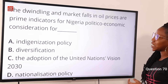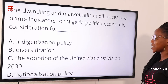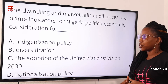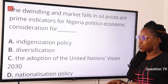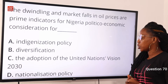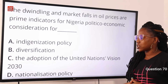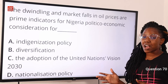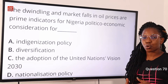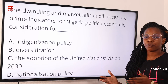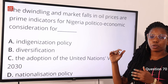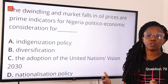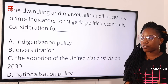Question 70: the dwindling market falls in oil prices are prime indicators for Nigeria's politico-economic consideration for — option A, indigenization policy; option B, diversification; option C, the adoption of the United Nations Vision 2030; option D, nationalization policy. The answer is option B, diversification. The question asks for a solution or alternative to the problem of declining oil prices. Diversification means shifting the economy away from a single income to multiple sources. Option B is the correct answer.